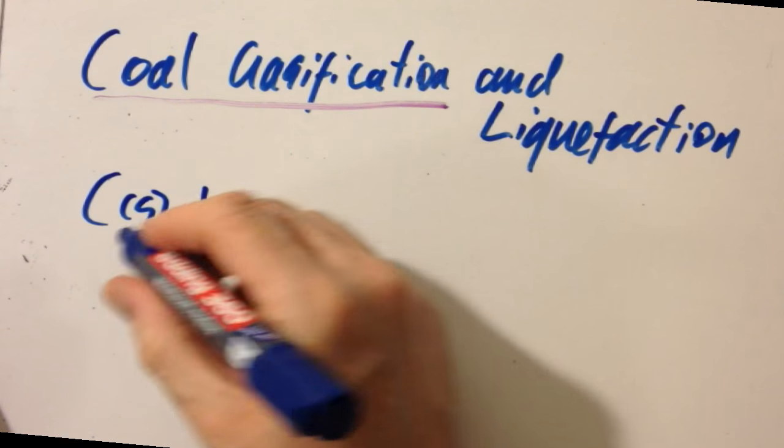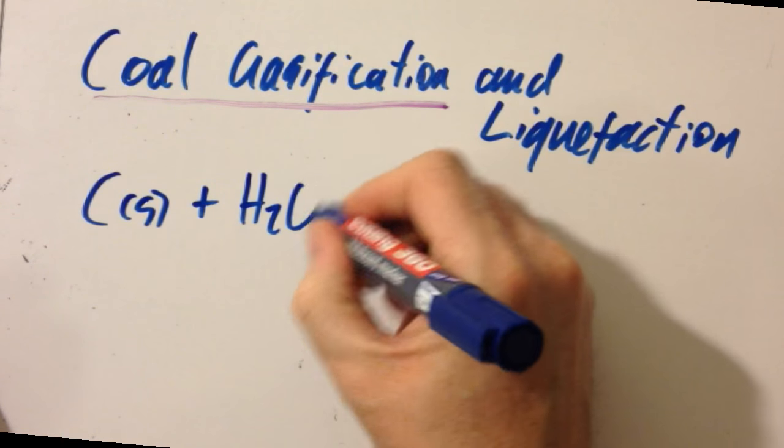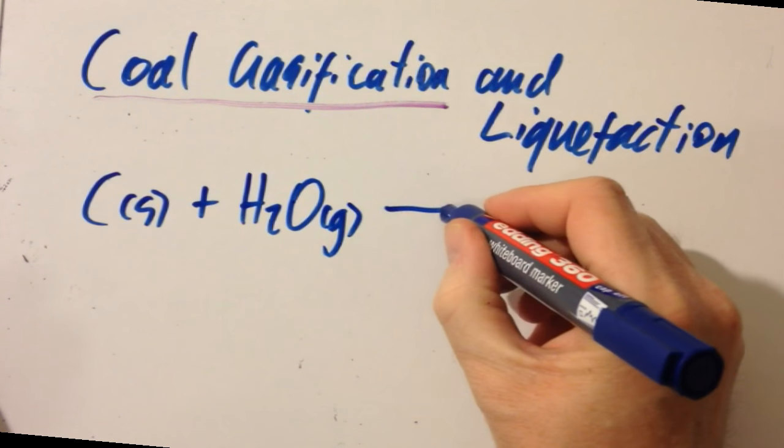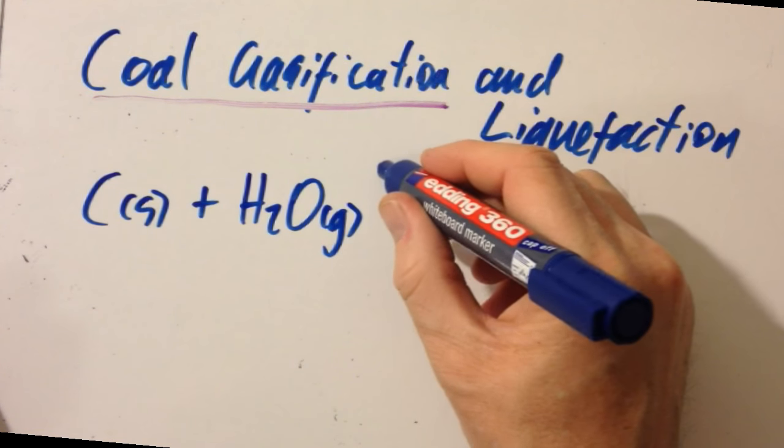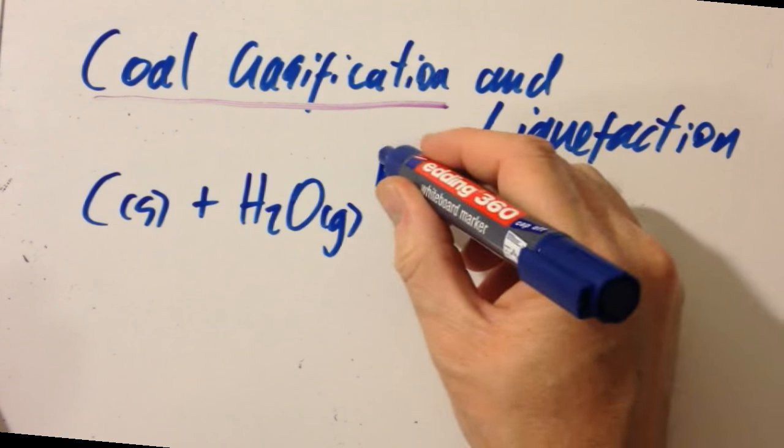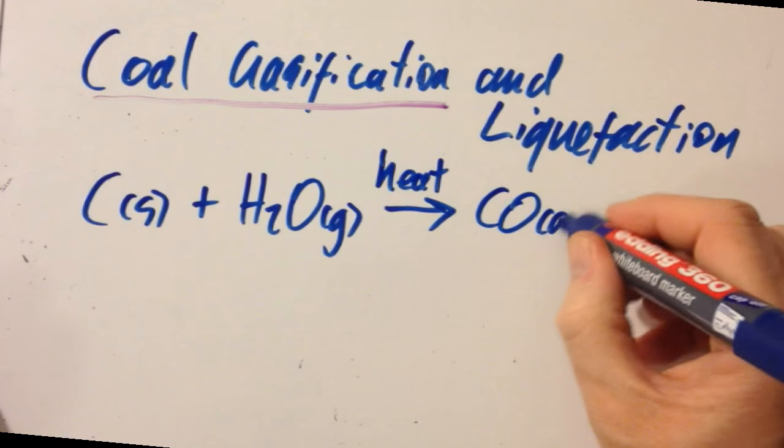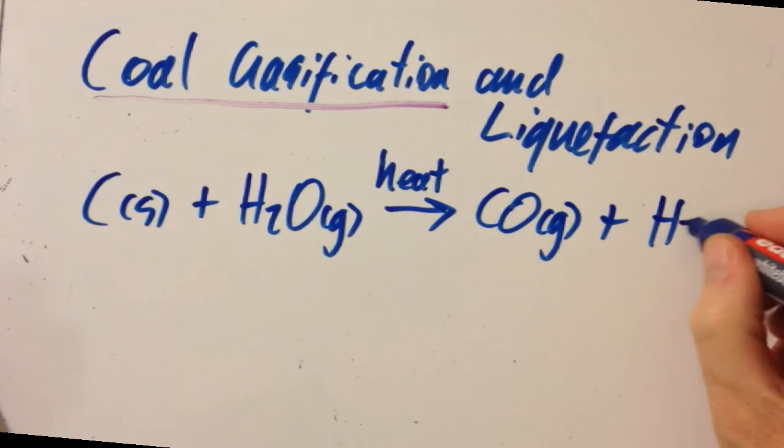So if I've got coal, that's carbon, and some water—well, make sure it's steam. Otherwise, you've just got wet coal. So make sure it's hot. That gives you carbon monoxide and hydrogen.